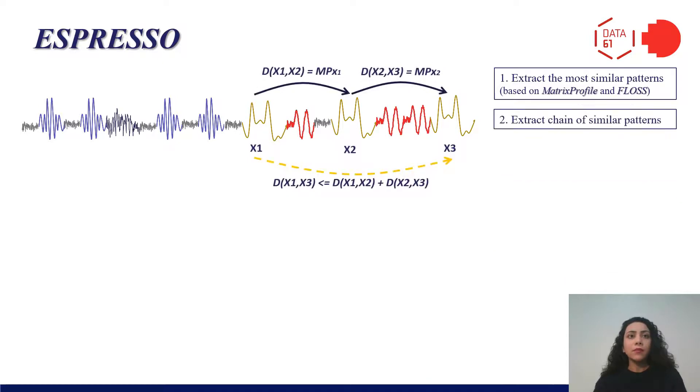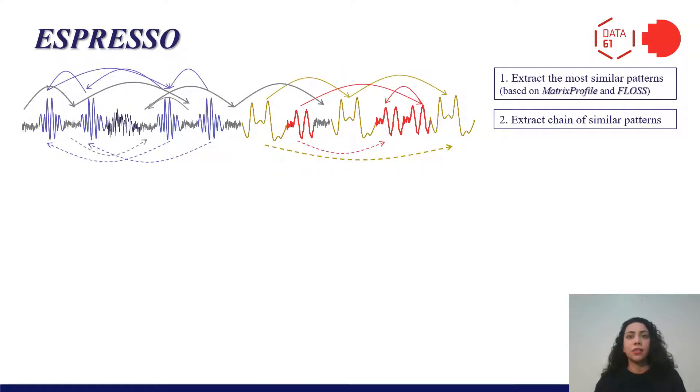Then, as an enhancement to FLOSS as a shape-based segmentation method, we find a chain of similar patterns for each subsequence based on the Euclidean distance as a similarity measure. The dotted arcs here show the newly added pairs in the chain.